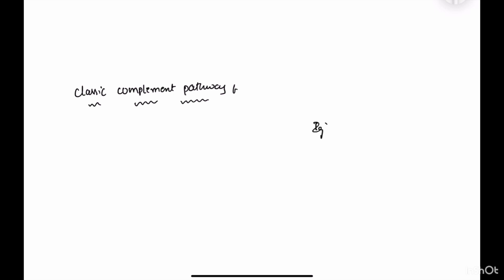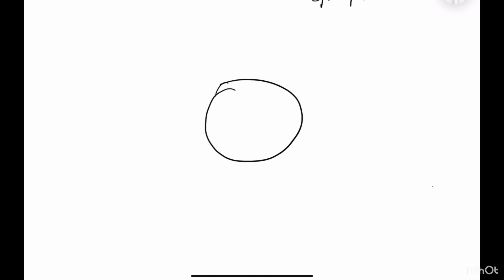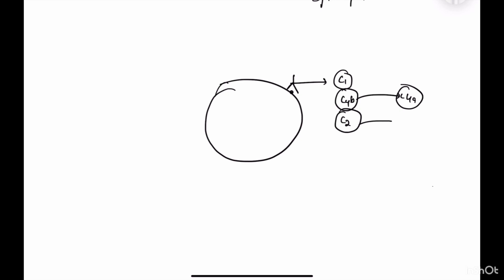IgG or IgM is needed for activation of the classic complement pathway. Let us take a bacteria — when IgG or IgM is attached to this bacteria, C1 comes and binds and starts activation of the classic complement pathway. Following C1, C4 comes and attaches to C1. C4 is divided into C4a and C4b, where C4a goes away and C4b remains. Following C4b, C2 comes and attaches to this complex and is divided into C2a and C2b; C2a goes away and C2b remains.